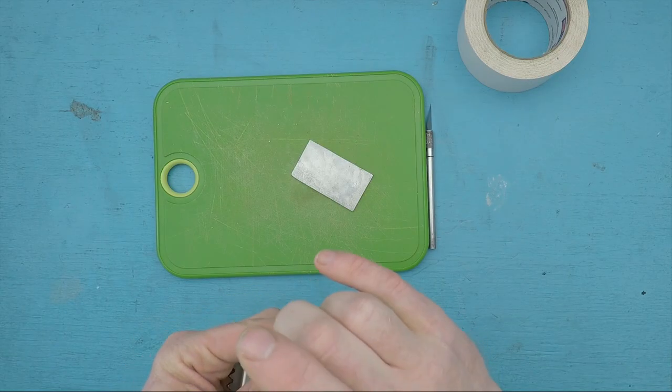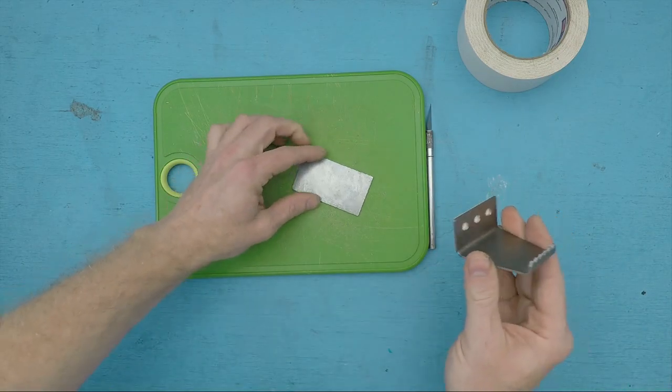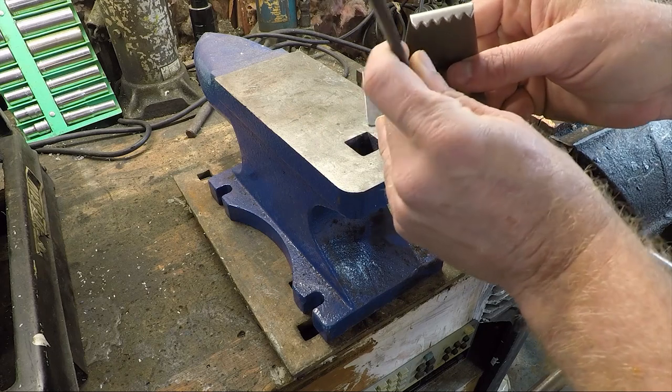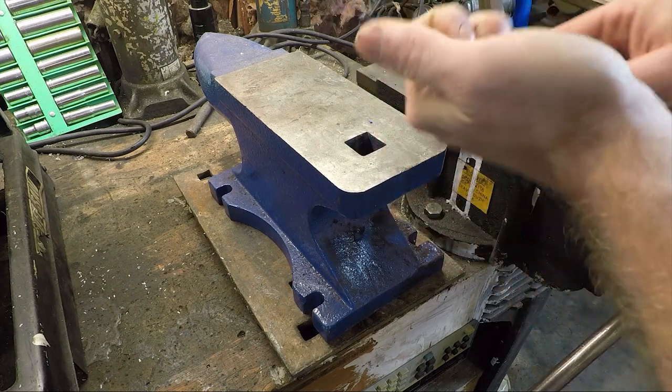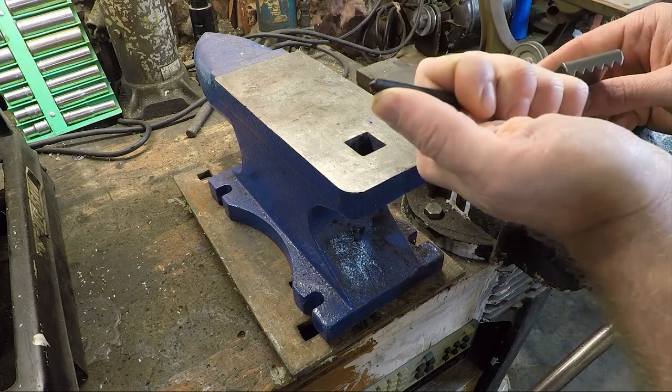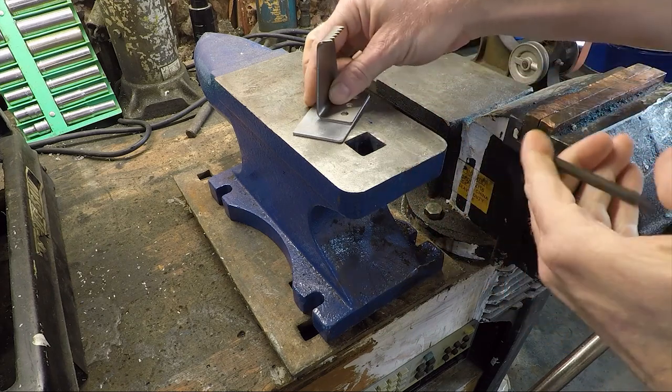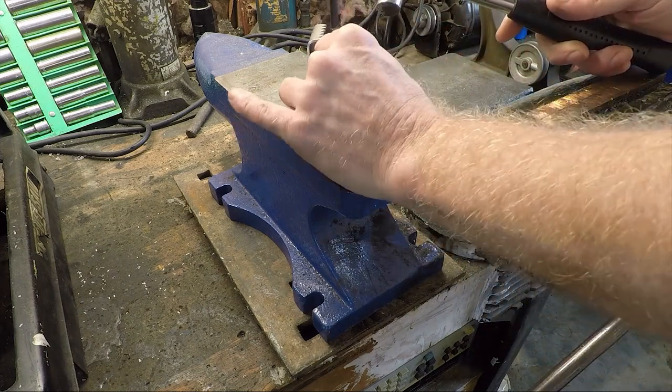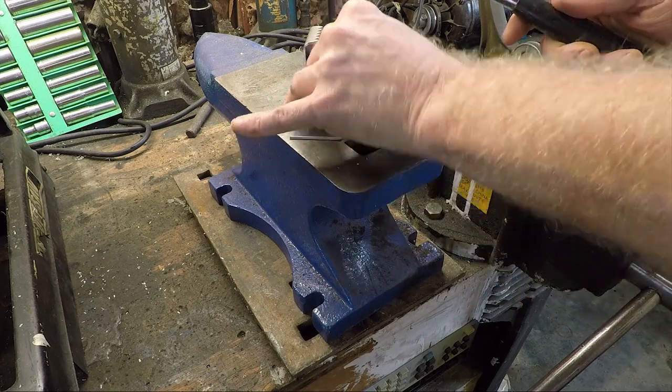I'm just going to use a bit of carpet tape to stick the master part to the stock. Then I'll take my transfer punch, which has the same diameter as this hole with a small sharp point in the center. Set it on an anvil, and go bop, bop, bop.